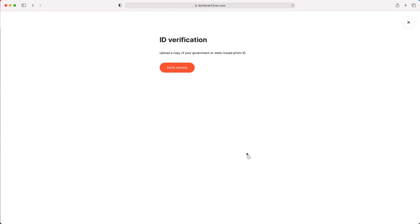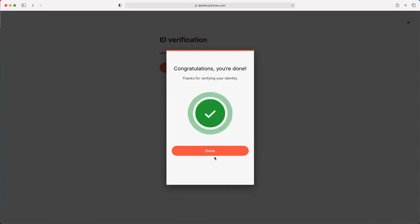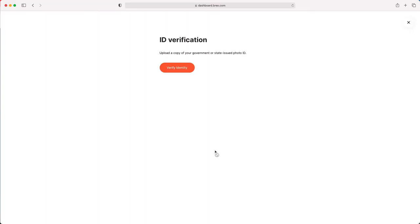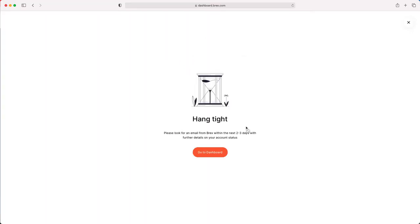Looks like it's going to have me verify my identity. All right, so my identity has been verified. I'm going to click done. Now after a lot of identity verification, I've gotten to this point which says look for an email from Brex within the next two to three days with further details on your account status. So we're going to wait for that email and we'll go from there.